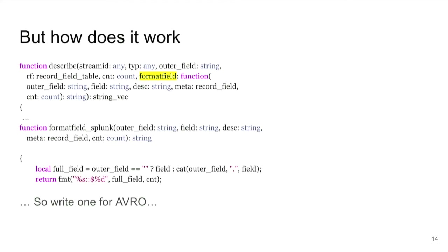The simplest of these is the Splunk one — it's two lines, so it fit on the slide well. All it does is some string manipulation: format the outer field properly and return the string we want to output. This is the output you saw a few slides ago for transforms. So all we have to do for Avro is write a similar thing. I wrote a format_field_avro on the plane on the way here, and it almost works — it has one known bug, no, two known bugs, and some number of unknown bugs. Hopefully it'll be done by next week.